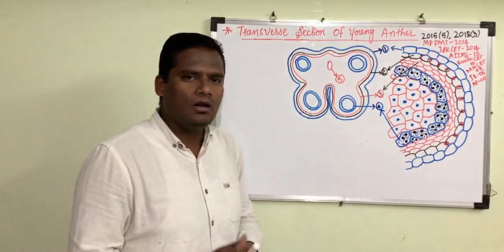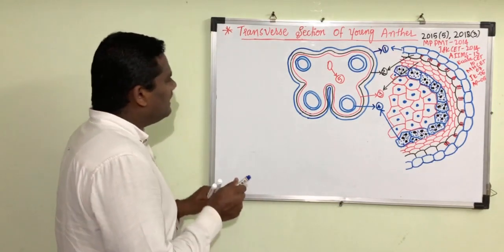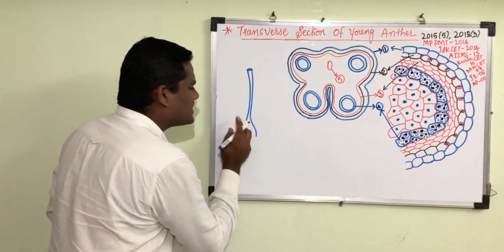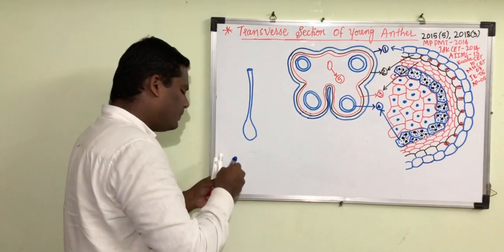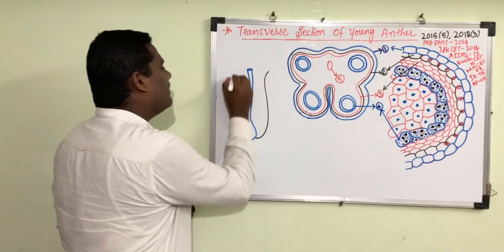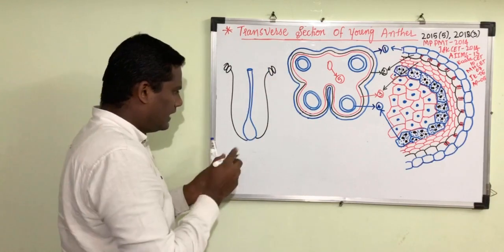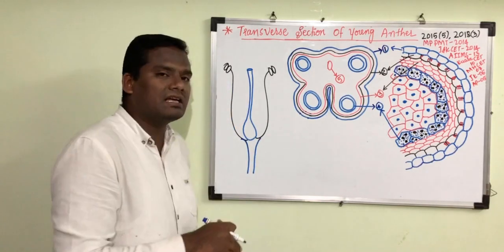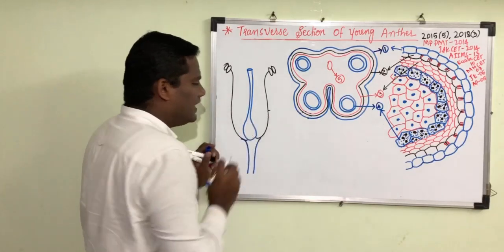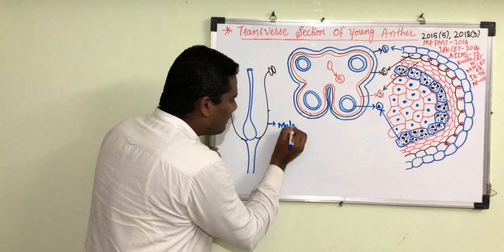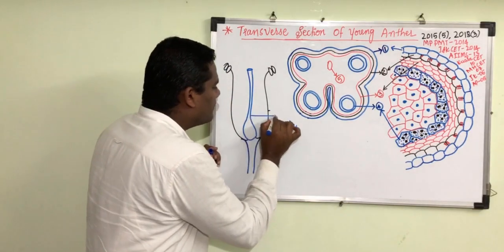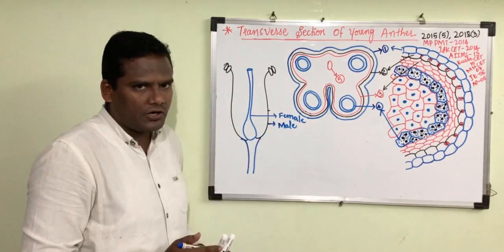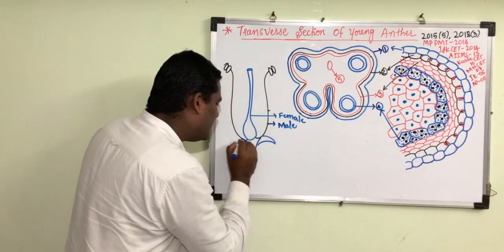Before we discuss the internal structure of the anther, we have to understand what an anther is. If I draw a typical bisexual flower - a bisexual flower consists of various fascinating structures. These two structures are very very important and they are held on a platform-like structure called a receptacle. This portion is called the male reproductive part of the flower, and this is the female reproductive part of the flower.